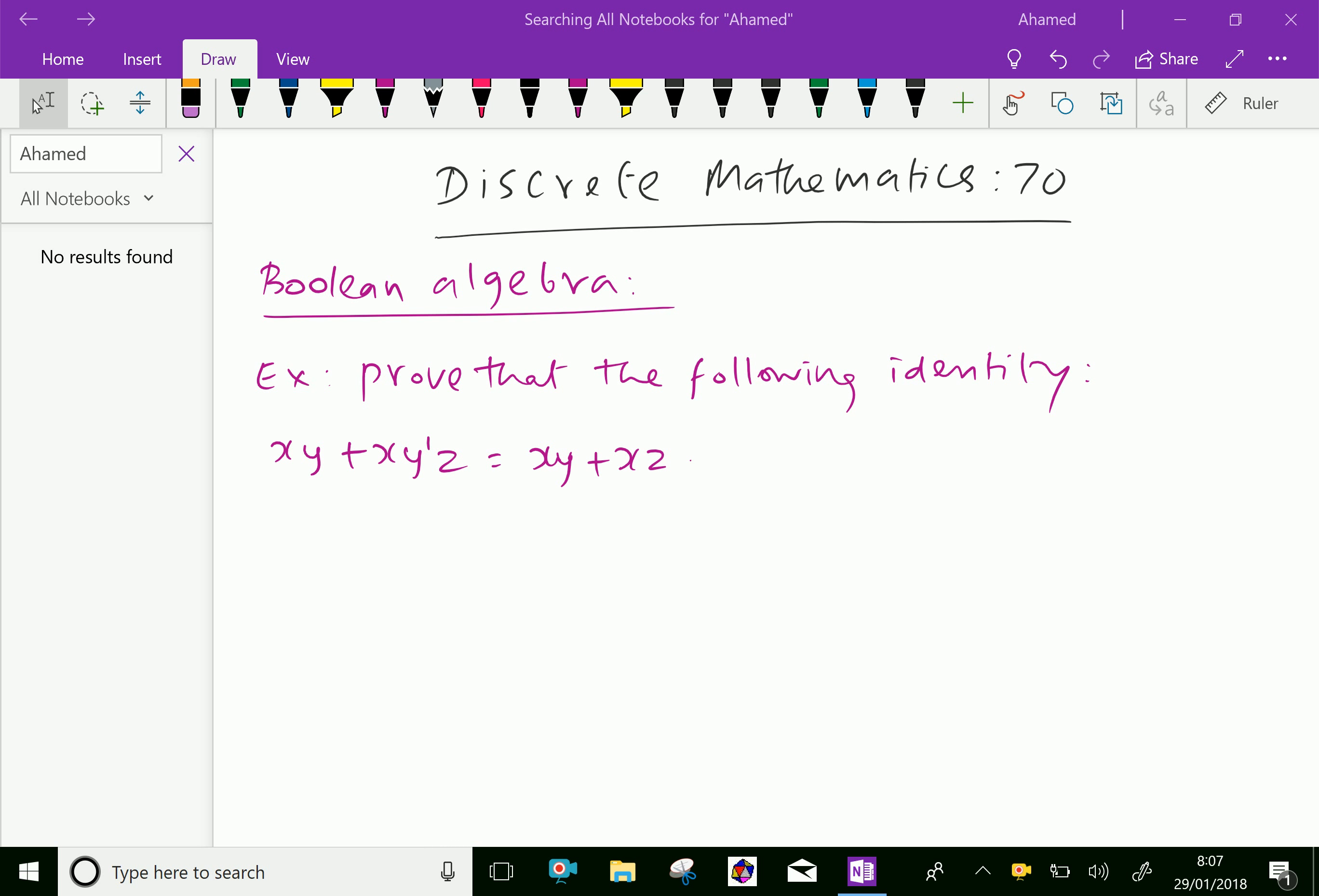Welcome to aminacademy.com. In discrete mathematics regarding Boolean algebra, let us know some example problems like proving identities.